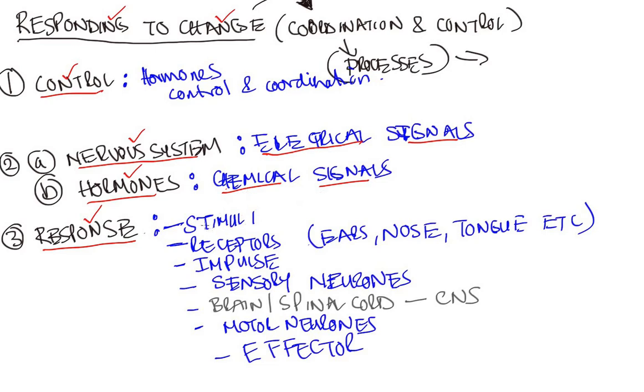A response is generated by a receptor which picks up a stimulus. The receptors may be in the ears, the nose, the tongue, the skin—we could say that these are just sensory organs. The sensory organs have receptors and these receptors are responsible for picking up the stimulus and an impulse is set up.